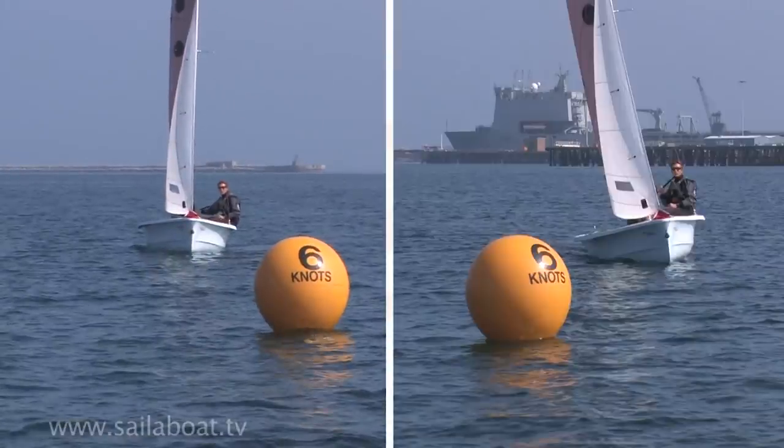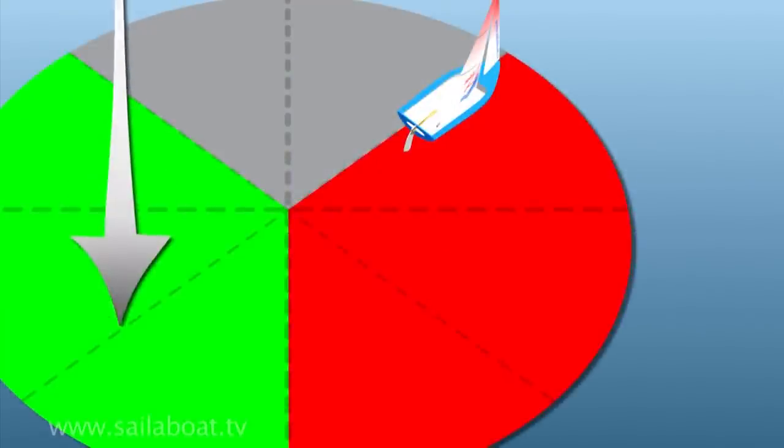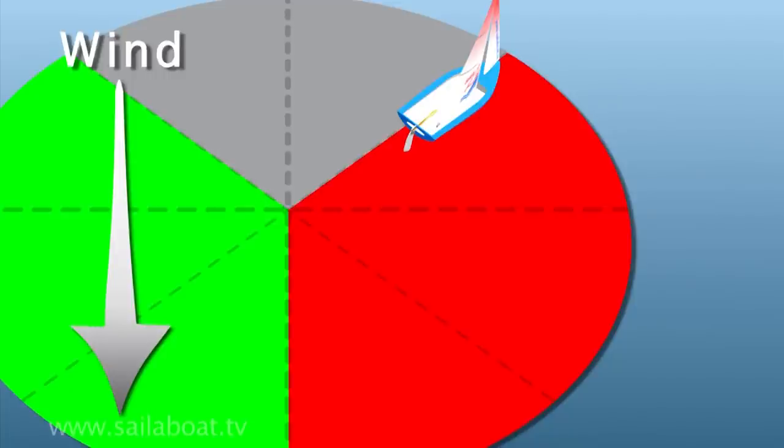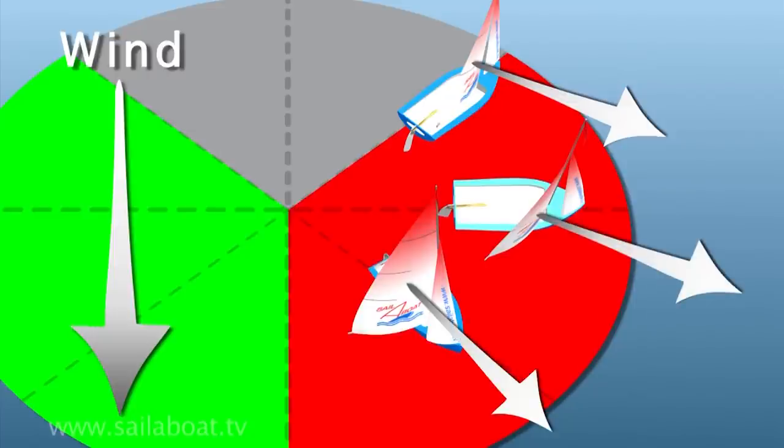When close hauled, most of the energy from the wind will try to blow you sideways. As you turn away from the wind, this force moves more to push you forwards rather than sideways. This affects the amount of centre board you need.